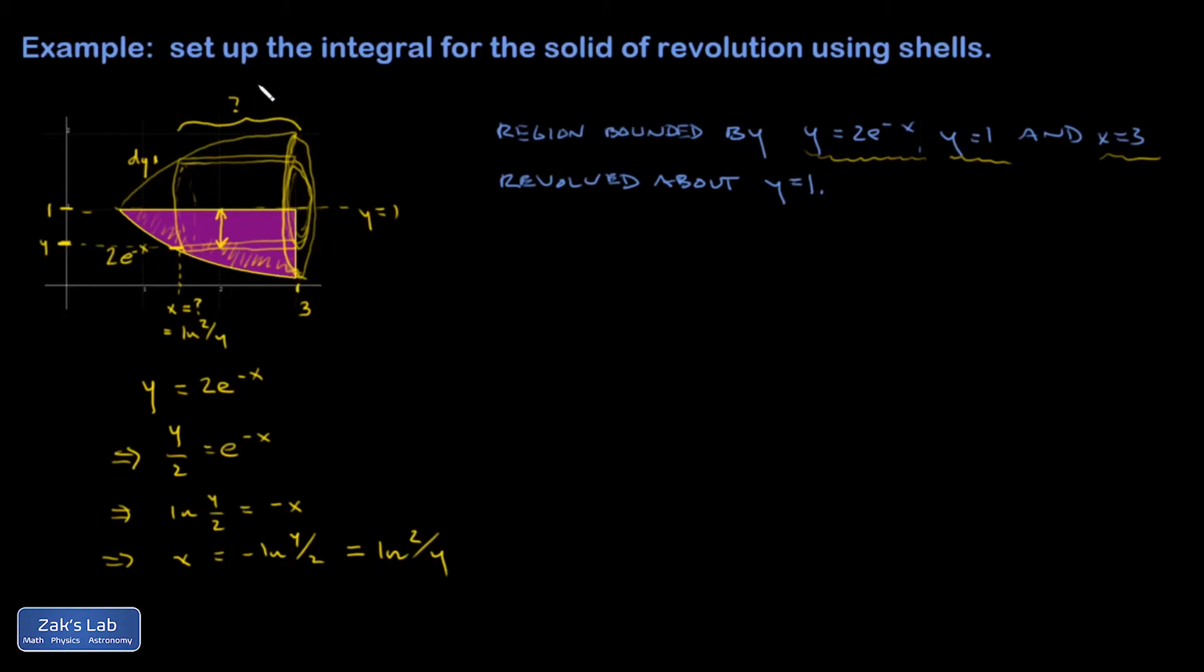So the width of the shell is going to be 3 minus natural log 2 over y. So now I'm ready to do a cut. I'm just going to slice my shell and unroll it, and then I should be able to express the amount of volume in that shell.